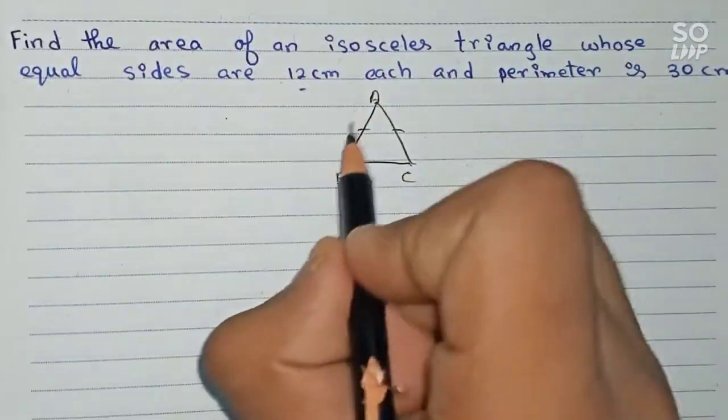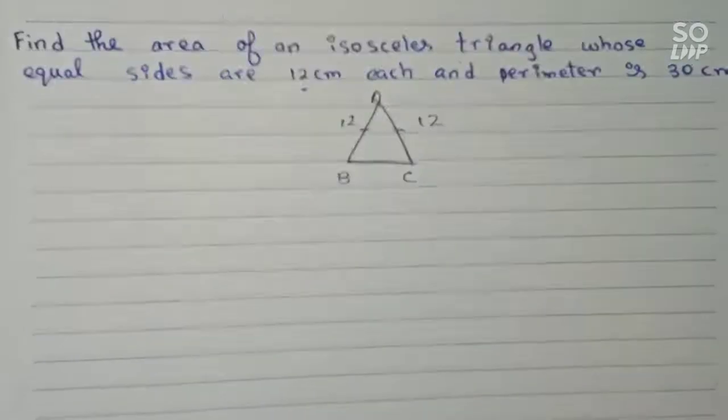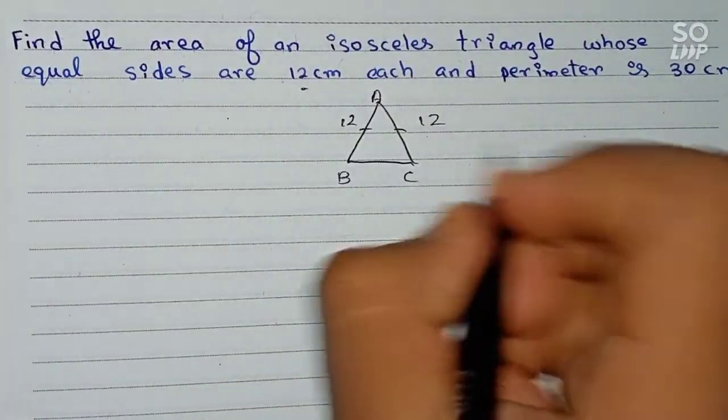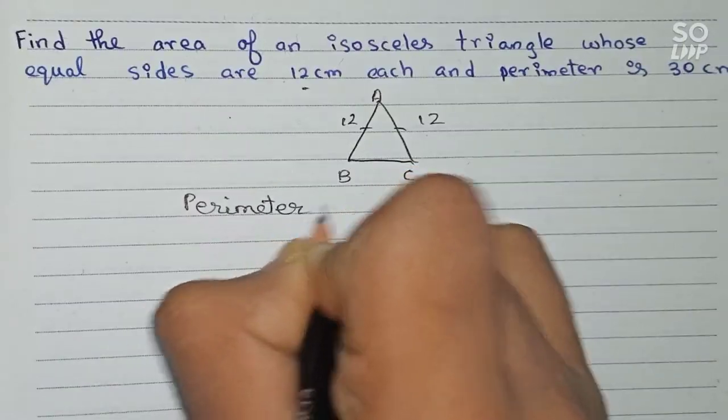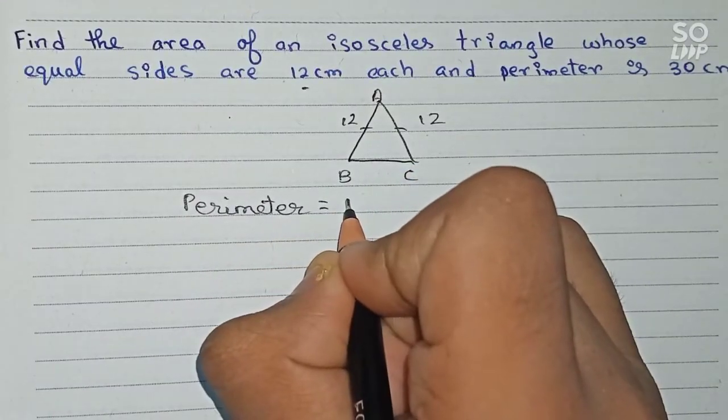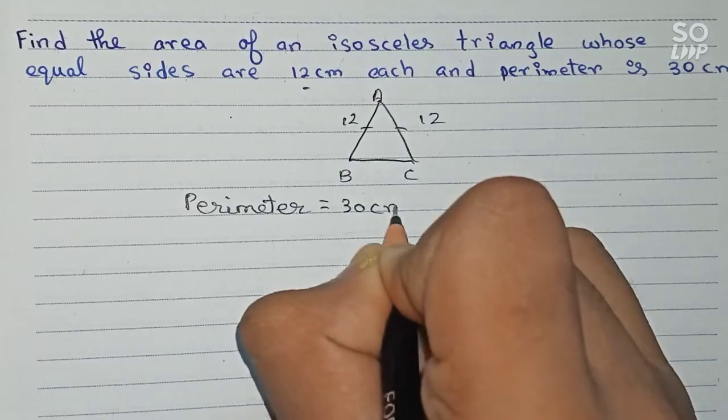That means this side is also 12, this side is also 12, and the perimeter is given as 30 centimeters.